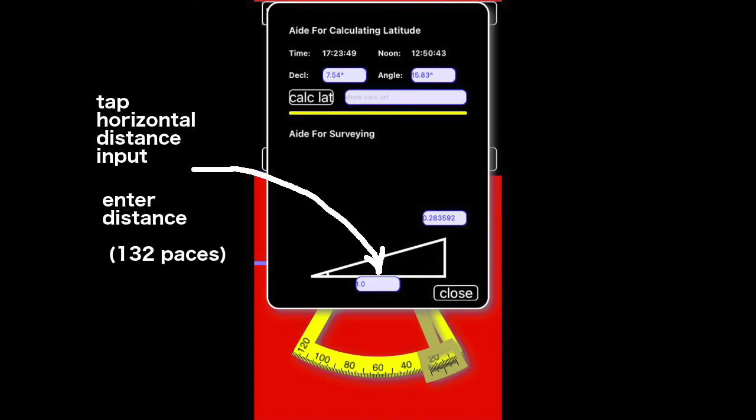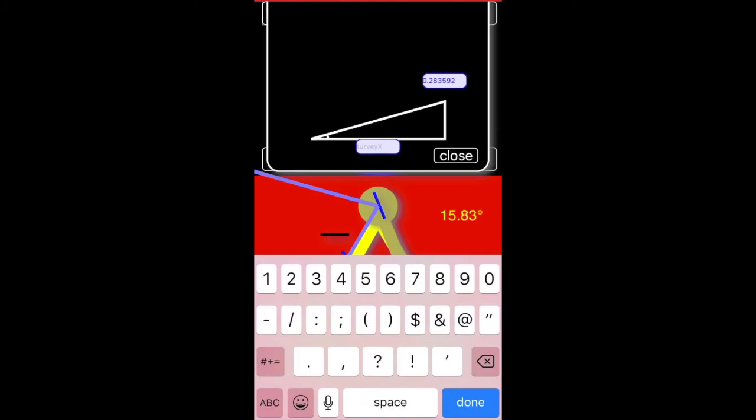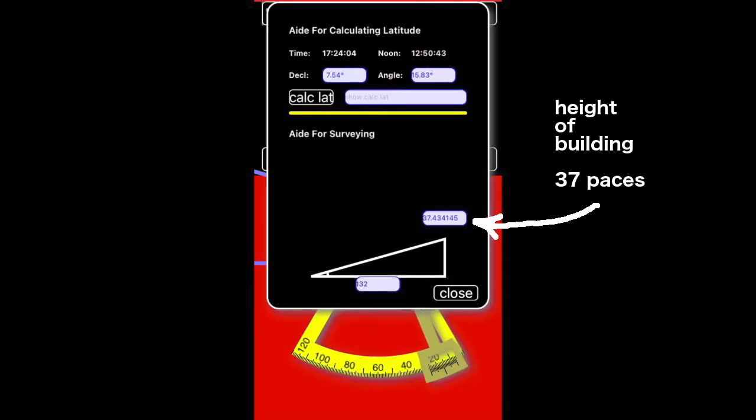Select the horizontal distance input and type in the distance. In this case, 132 paces. The height of the building, 37 paces, is displayed.